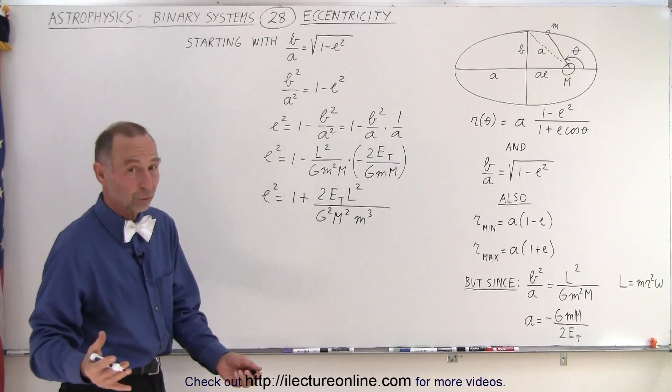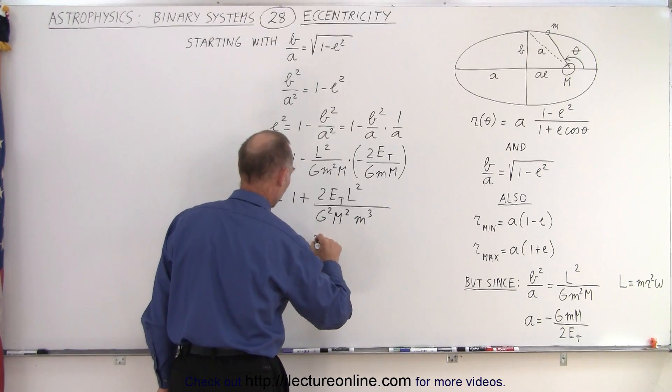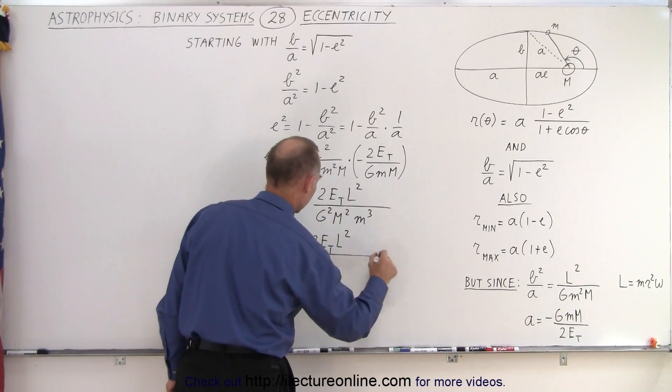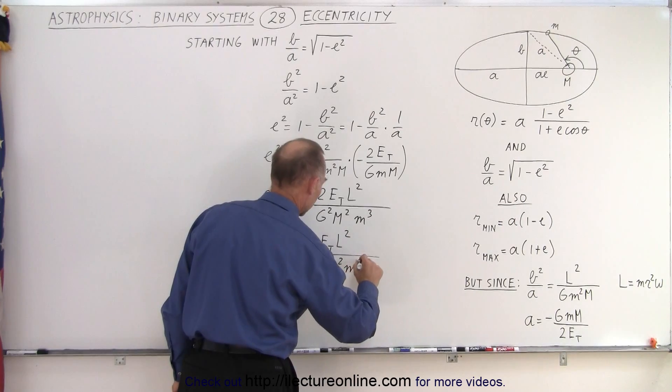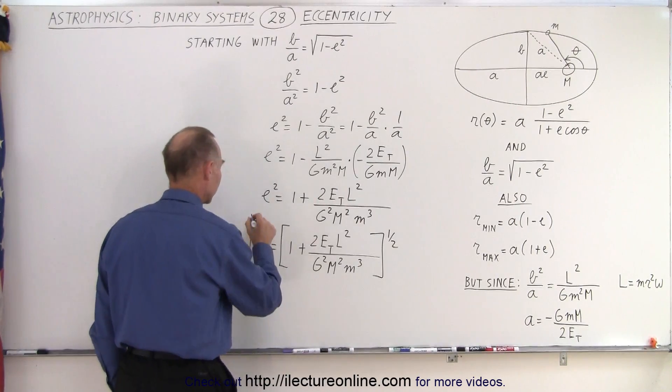And of course, we take the square root of both sides. Now we have e is equal to 1 plus twice the total energy angular momentum squared divided by G squared M squared little m cubed all to the 1 half power.